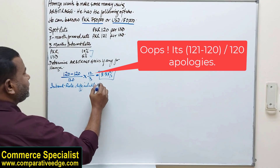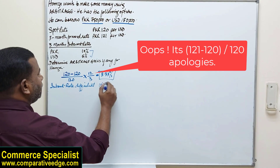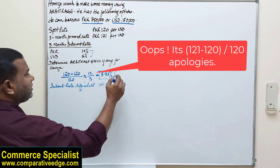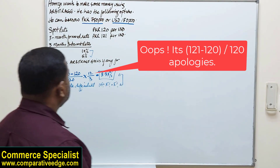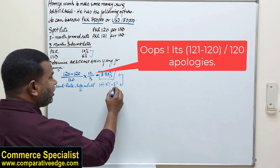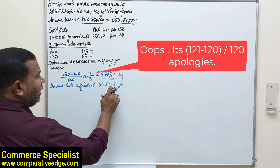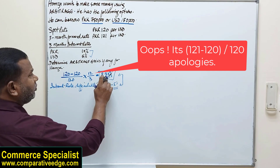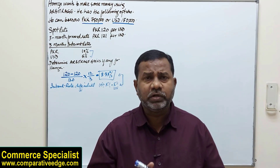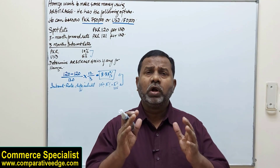Now let's look at the interest rate differential — that's 10 minus 5, which is 5%. Since the interest rate differential of 5% is not equal to the forward rate premium of 3.33%, this means there is some possibility for an arbitrage gain.